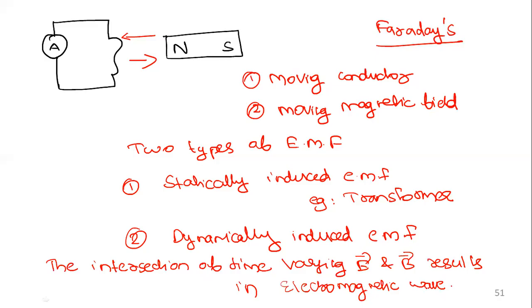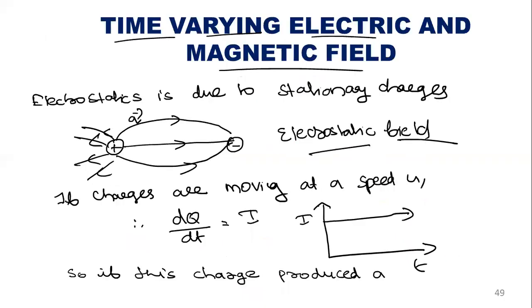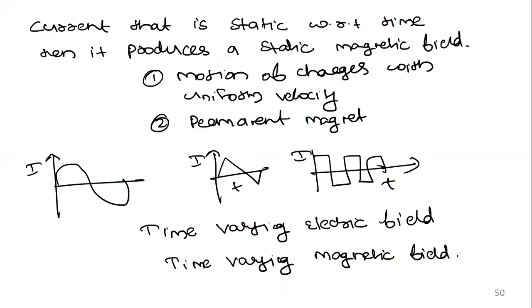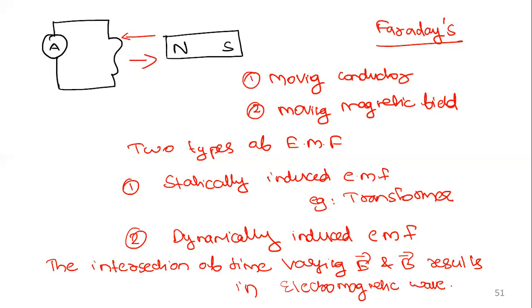The basic idea is: electrostatics and magnetostatics were not changing. Then, due to either a moving conductor or a moving magnetic field, there will be a time-varying electric and magnetic field. This is the basic principle of most machines, which results in an induced EMF — either statically induced or dynamically induced. The interaction of this time-varying electric and magnetic field results in an electromagnetic wave. Now let's see what Faraday's law states.